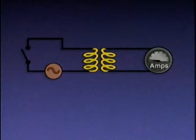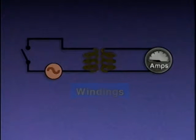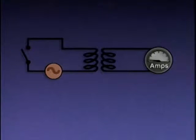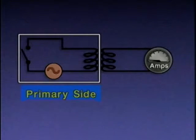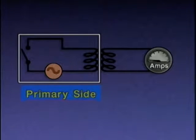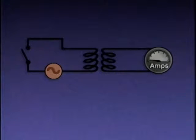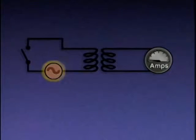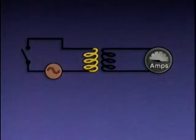The transformer is represented by these two coils of wire called windings. The circuit can be divided into two halves, or sides. This side is the primary side. It consists of components that handle power coming into the transformer. In this circuit, the primary side includes an AC power supply, which is represented by this symbol, a switch, and one of the transformer coils called the primary winding.